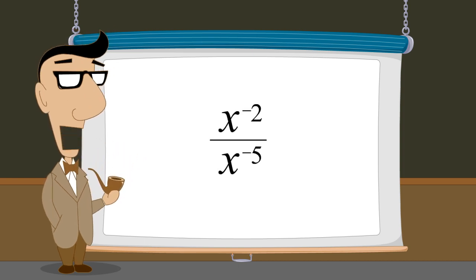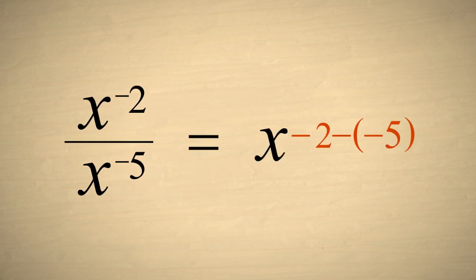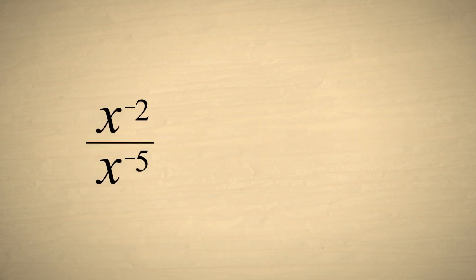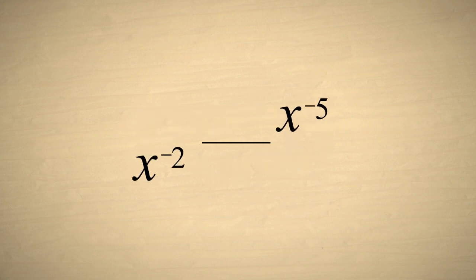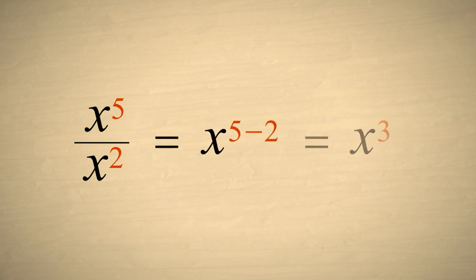Now let's simplify an exponential expression with negative exponents in both the numerator and the denominator. One way to simplify this expression is to subtract the exponent of the denominator from the exponent of the numerator. Subtracting negative five is the same as adding five, so we get x cubed. If you prefer to work with positive exponents, an alternate way is to move the numerator term to the denominator and the denominator term to the numerator, switching the sign of both exponents to positive. We can then subtract the exponents to get x cubed.